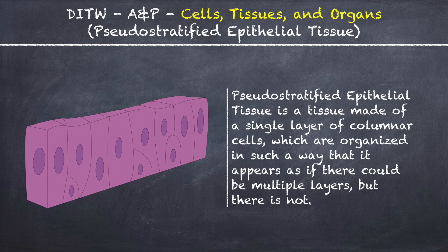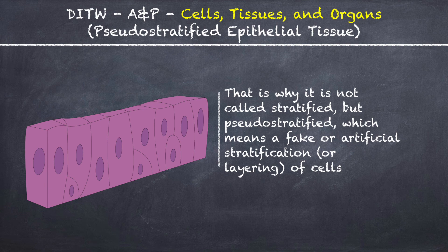Pseudostratified epithelial tissue is a tissue made of a single layer of columnar cells which are organized in such a way that it appears as if there could be multiple layers but there is not. That is why it is not called stratified but pseudostratified, which means a fake or artificial stratification or layering of cells.